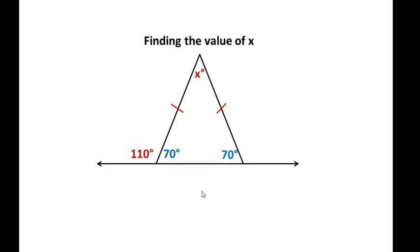Now we have all three angles. We can set up an equation. 70 plus 70 plus x equals 180. And then of course, 70 and 70 is 140. Subtract 140. And then x equals 40.